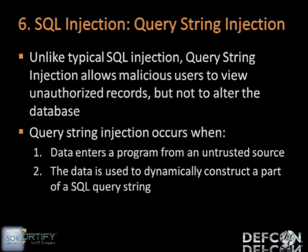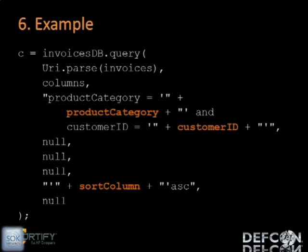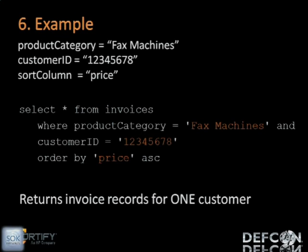In terms of Android, the difference between SQL injection and query string injection is the APIs exposed to you — some APIs allow you to specify the entire query as a string, while some APIs allow you to specify parts of the query. Here's a specific example: a call to a query API that returns invoice records for a product category for a particular customer with a specific customer ID, sorted by a sort column. If you supply 'fax machines' as the product category, '12345678' as the customer ID, and 'price' as the sort column, here is what your query looks like — it returns invoice records for one customer.